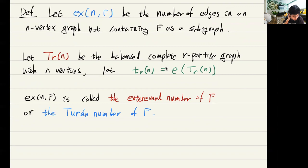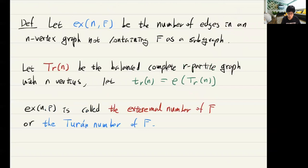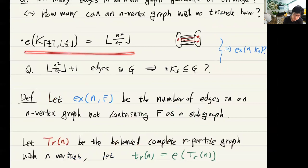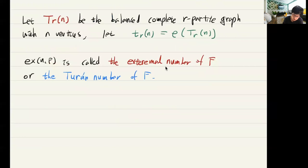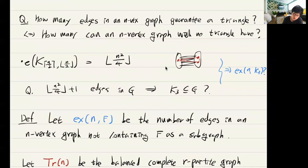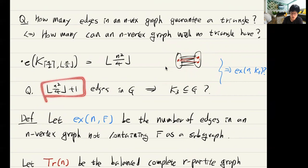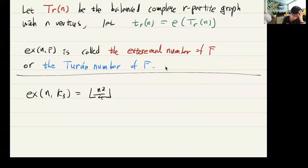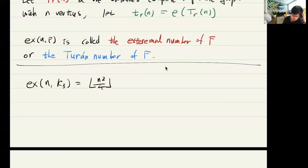With this definition, if we have one more edge than the extremal number, then we always have to have F as a subgraph. We can show this is best possible: the extremal number ex(n, K₃) equals floor of n² over 4. The only triangle-free graph with this many edges is T_{2,n}, the complete bipartite graph. As soon as we have one more edge, we must have a triangle.